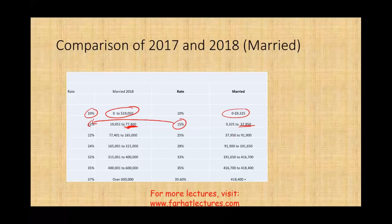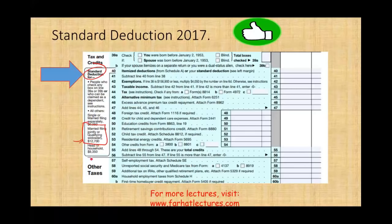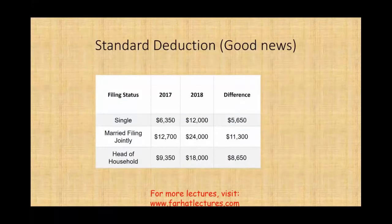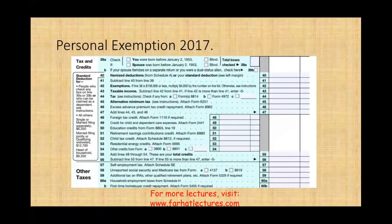The tax rate and tax bracket changes are a big improvement compared to prior years. Now let's look at the standard deduction. The standard deduction is an amount given to you by the government — everyone gets it if you don't itemize. For married filing jointly it was $12,700; for single it was $6,350. They almost doubled the standard deduction — a difference of $5,650 for single and $11,300 for married filing jointly.